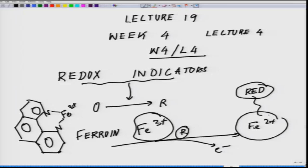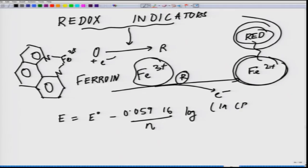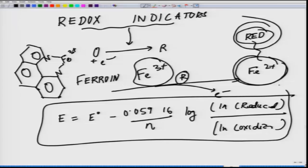If you look at this reaction, what is happening is: oxidized molecule plus electron becomes reduced. You can write the Nernst equation: E = E0 − 0.05916/n × log([reduced]/[oxidized]), where n is the number of electrons. Based on that, you can calculate and predict the potential range over which the indicator color will change. There are several situations where the Nernst equation can be applied.